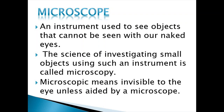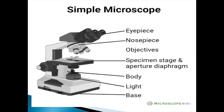A microscope is the instrument used to see objects that cannot be seen with the naked eye. Tissues and their components are microscopic, not macroscopic. The science of investigating small objects using a microscope is called microscopy. Microscopic means invisible to the eye unless aided by a microscope.